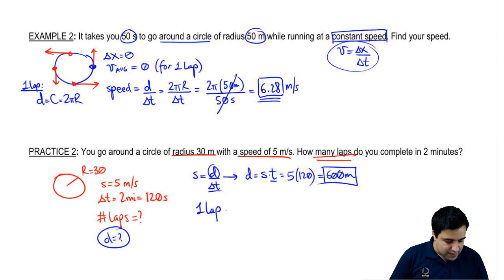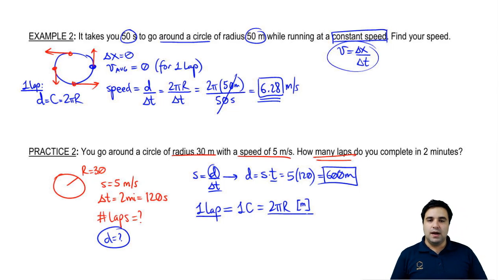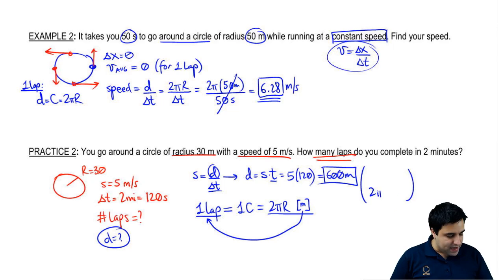One lap equals to one circumference of distance. So it equals to 2 pi r. And it has a unit of meters. So one lap converts to meters. Usually one lap is 2 pi r. So if I want to go from, what I can do is I can go from meters to laps. It's a conversion. So 2 pi r meters equals one lap. Just think of lap as a unit.